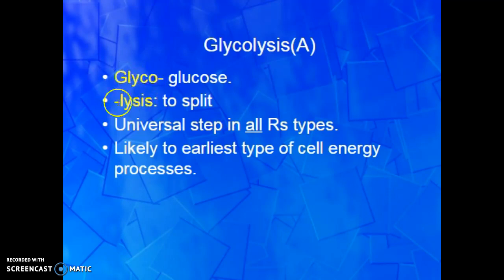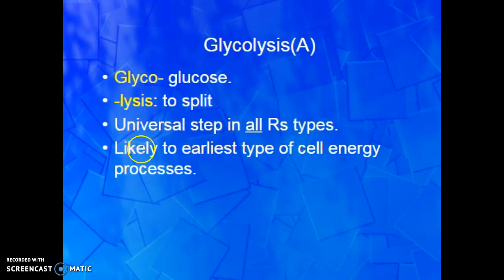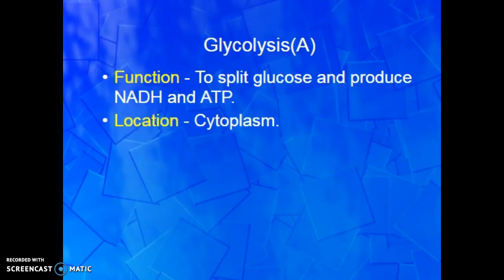A little word skills to begin with: 'glyco' always means glucose, and 'lysis' always means to split — think about the lysosome in cells, it splits things open. So glycolysis is splitting glucose. It's a universal step in all respiration types, which hints that it was probably the first type of cellular energy process. The location of this process is also a hint that it was probably the earliest. Glycolysis is splitting glucose to produce NADH and ATP — we split a 6-carbon sugar into a 3-carbon sugar — and this happens in the cytoplasm.